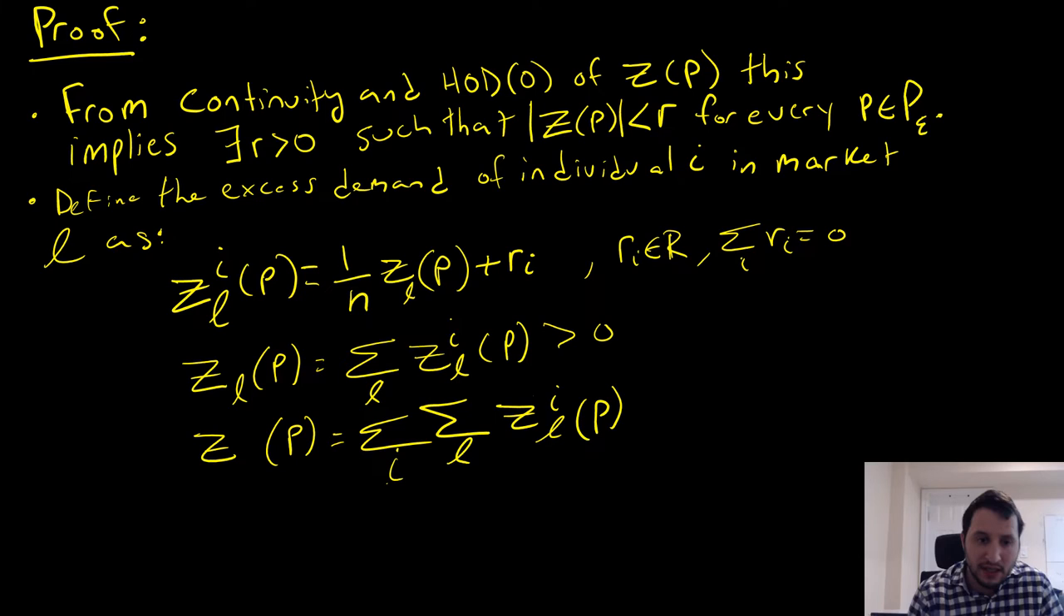The sum of all these R_i's equals zero. We also define another property: the sum of all these individuals, or sum of all these commodities L, equals Z_L. When we sum over all individuals and all commodities, we get our vector, which is our excess demand function.